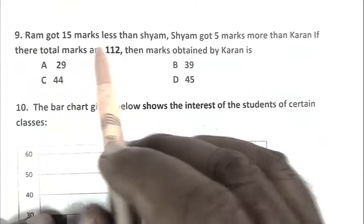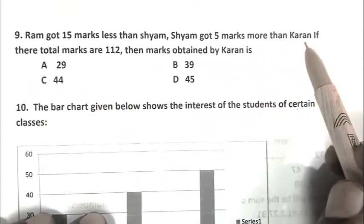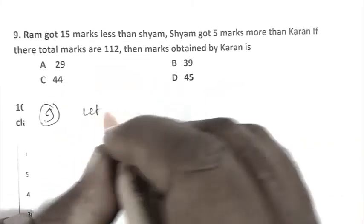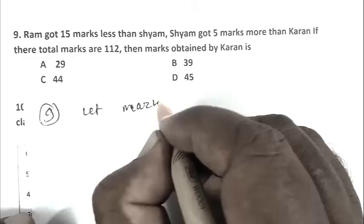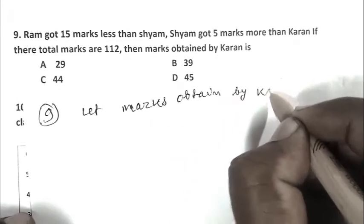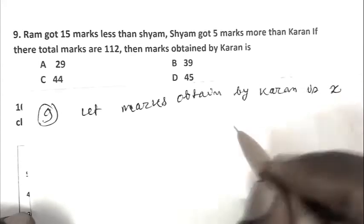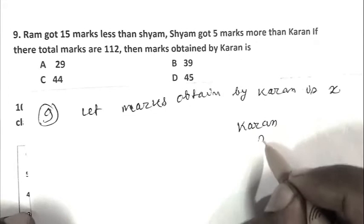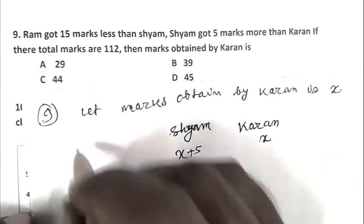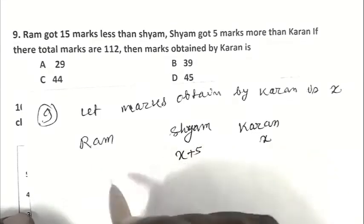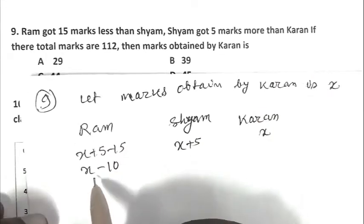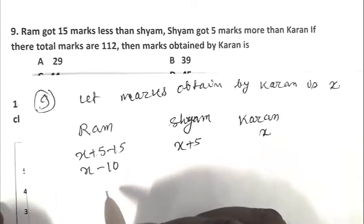Question number 9: Ram got 15 marks less than Sam. Sam got 5 marks more than Karan. If their total marks are 112, then marks obtained by Karan is. Let marks obtained by Karan be X. So Karan is X, Sam is X plus 5, and Ram is X plus 5 minus 15, that is X minus 10.